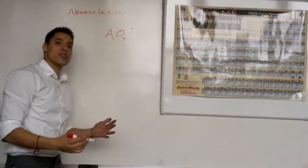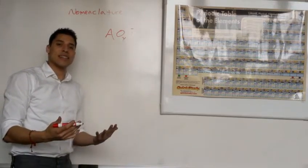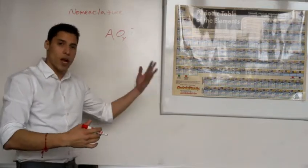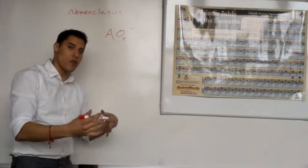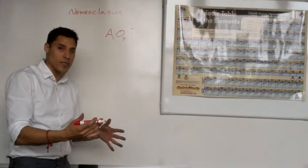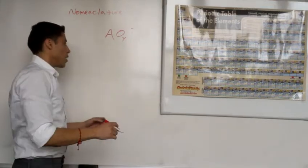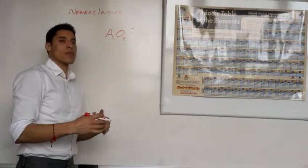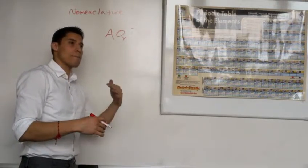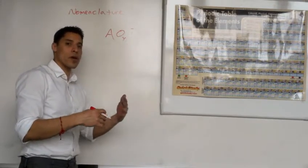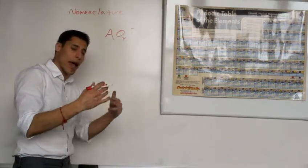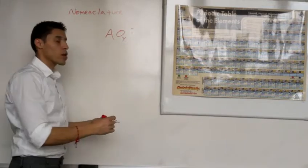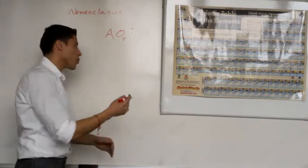Now that we've determined all the '-ates' — iodate, carbonate, sulfate, phosphate — we're going to learn all the '-ites,' and also the 'per-ate' and 'hypo-ite' forms. We're going to do that by following this table.